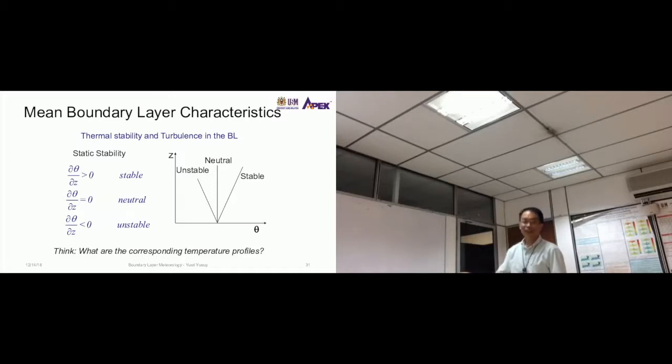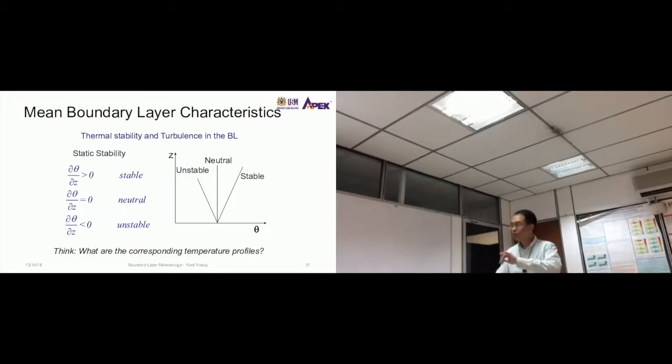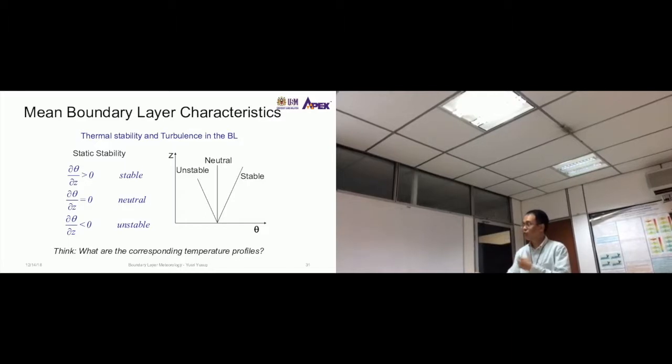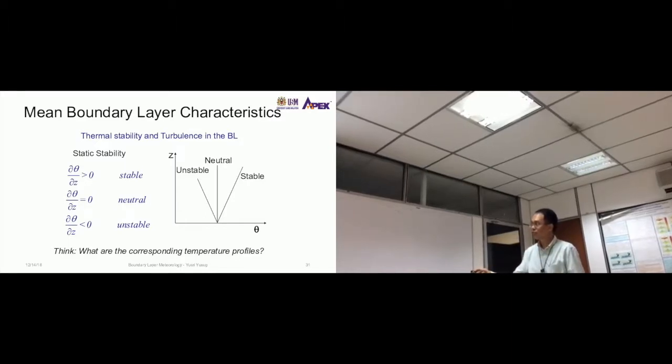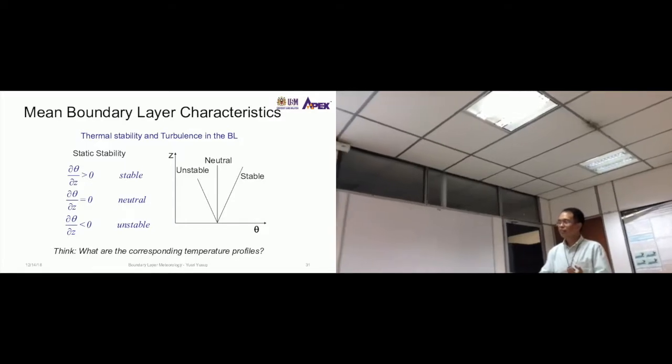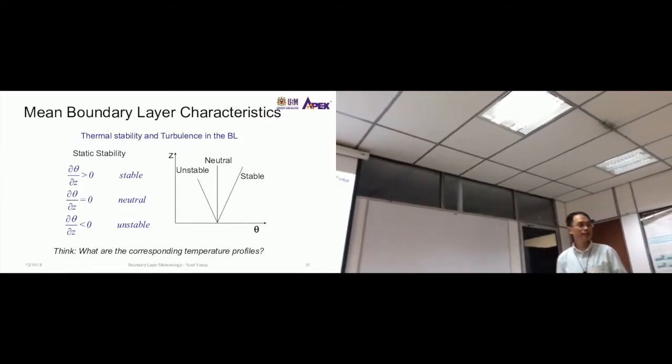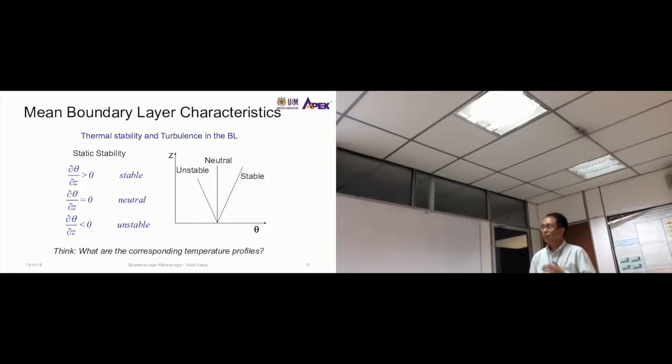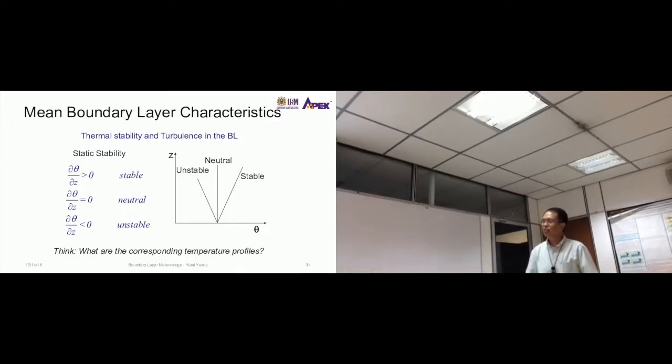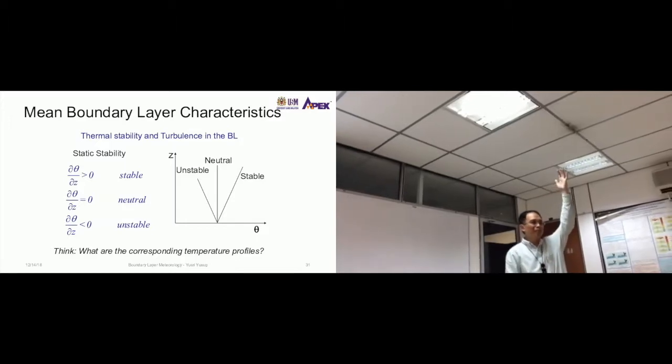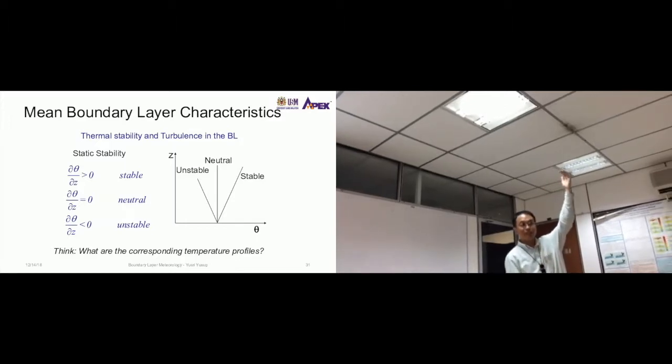One way to quantify this instead of having a graph to show you visually that one is unstable, neutral, and stable, but let's say you just have a parameter. You look at the difference in temperature with height. Basically it's a derivative, but actually it's just a difference. You measure the temperature at the ground, then measure temperature somewhere above, maybe 10 meters above.